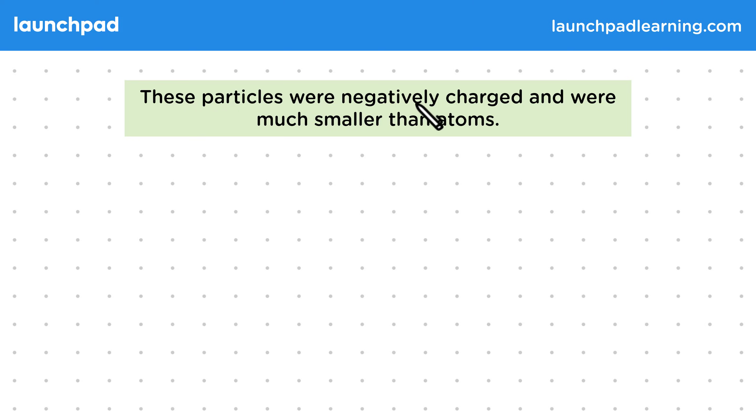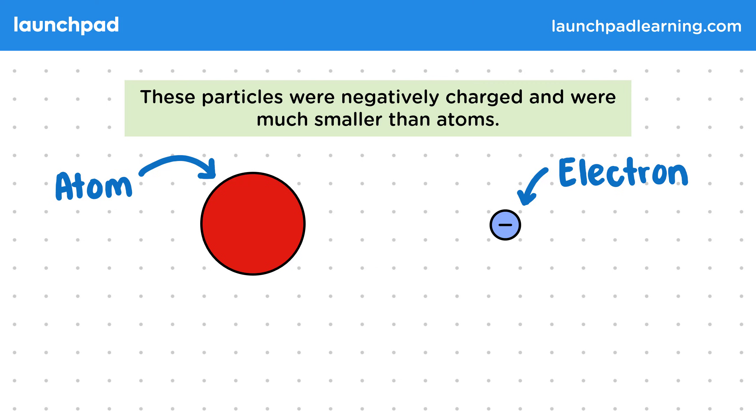These particles were negatively charged and were much smaller than atoms. Remember at this point in time, an atom was seen to be the smallest possible piece of matter. Discovering a particle smaller than an atom was very significant, as it proved that atoms weren't the smallest possible pieces of matter.